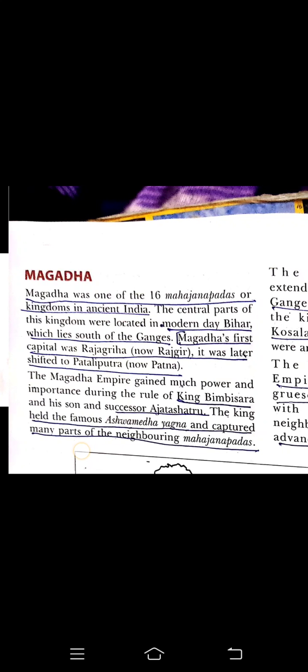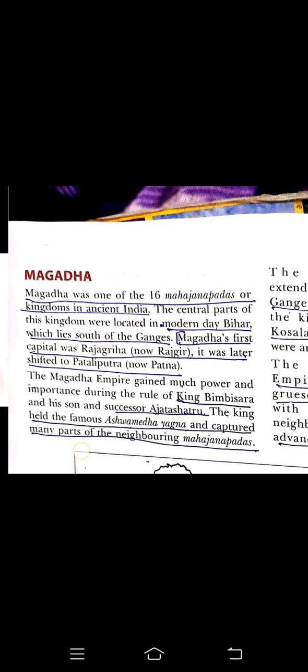Magadha's first capital was Rajgriha, which is now known as Rajgir. It was later shifted to Pataliputra.